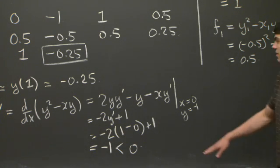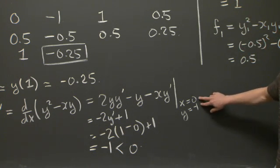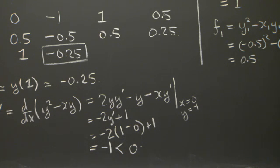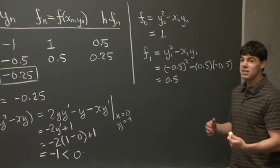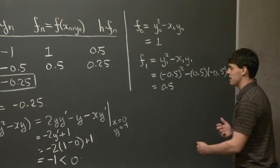So we've just shown that the concavity at our starting point, x = 0, y = -1, is less than 0. So what this means is that our initial approximation is going to overestimate the solution. We can see that it's going to overestimate it just by a quick sketch.